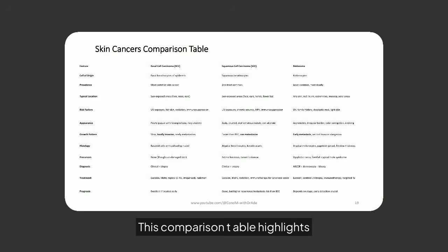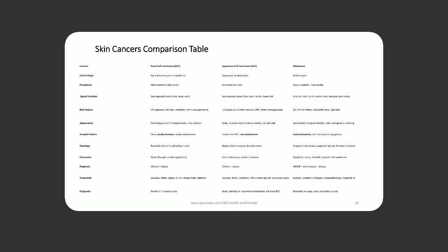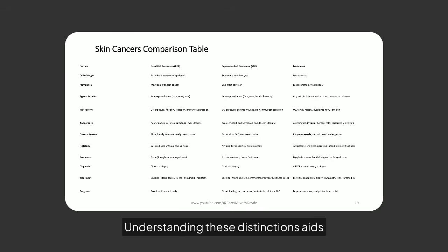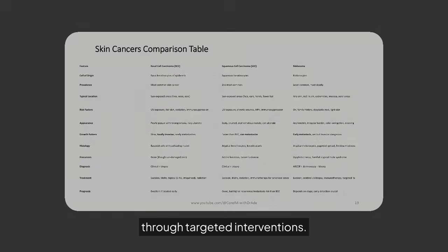This comparison table highlights key differences among basal cell carcinoma, squamous cell carcinoma, and melanoma. Understanding these distinctions aids in diagnosis, treatment planning, and improving patient outcomes through targeted interventions.